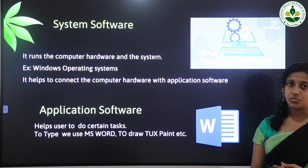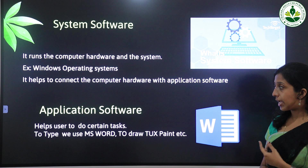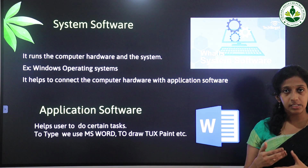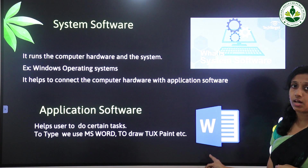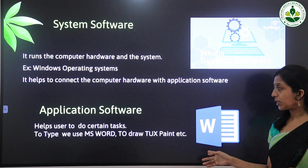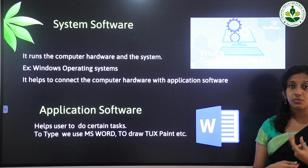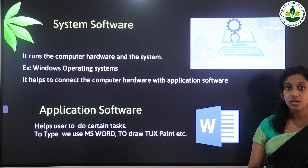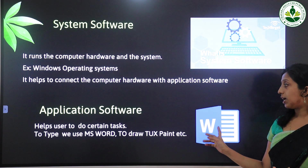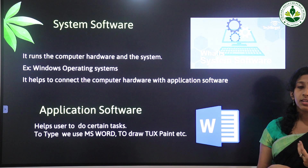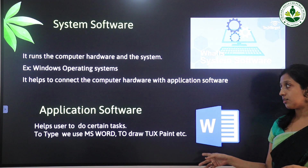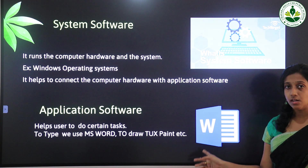Next is application software. Application software helps the user do certain tasks. To do tasks on a computer, we need different kinds of application software. For example, if we want to type something, we need MS Word. If we want to draw something, we need MS Paint or Tux Paint. These are examples of application software.